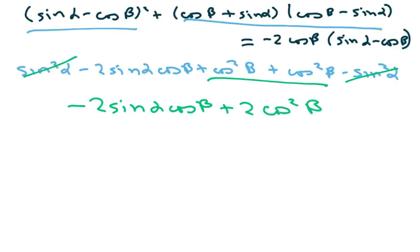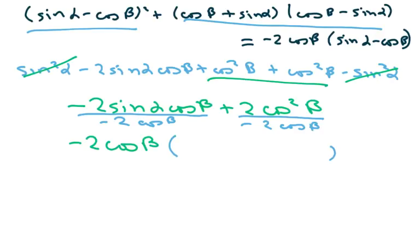Now factor out a negative 2 cosine of beta, and like we did last time, basically you're dividing each piece by negative 2 cosine of beta. And that leaves us negative 2 cosine of beta, because we can't lose that.